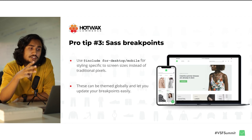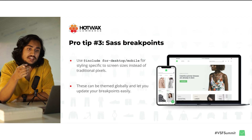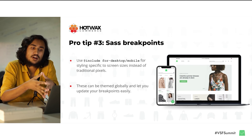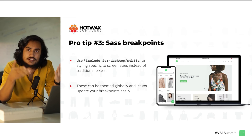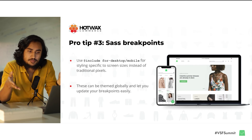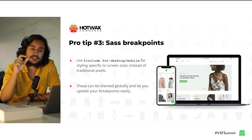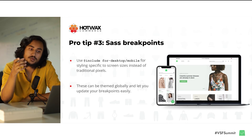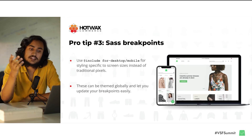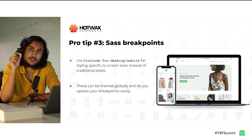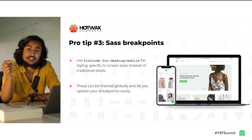A third super handy one is SASS breakpoints. Managing breakpoints across a site is often painful and requires double-checking to make sure you don't use the wrong values in different places. SFUI has a great SASS helper called at-include for desktop or for mobile, letting you set your mobile and desktop view sizes once and then use them across your entire theme for device-specific styling.